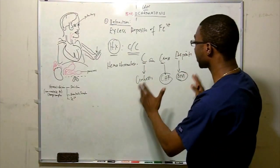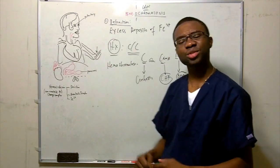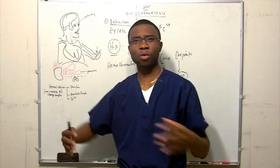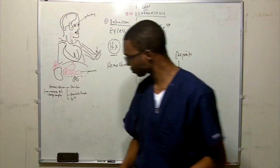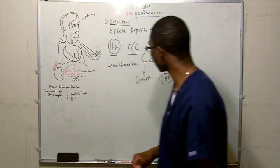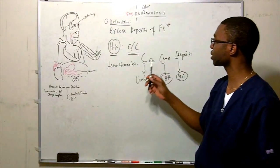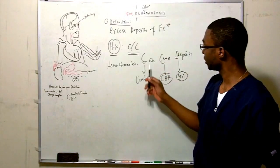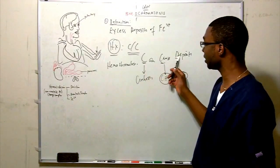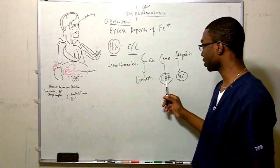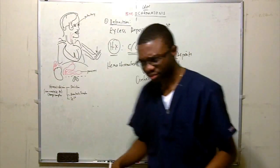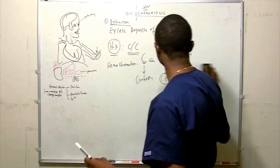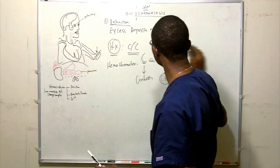Let's keep focusing on the history, which takes us back to pathophysiology and why they complain of all these symptoms. The mnemonic is: hemochromatosis can cause deposit — CCD: cirrhosis, CHF, and diabetes disease. Let's talk about all the symptoms one at a time.